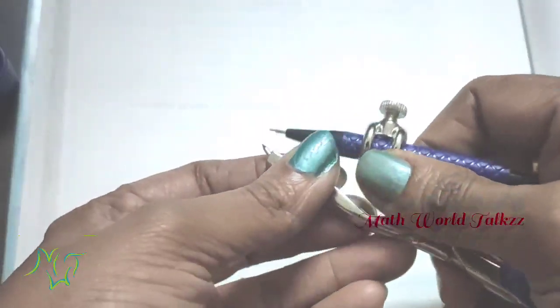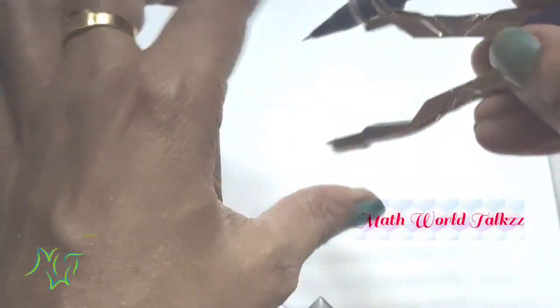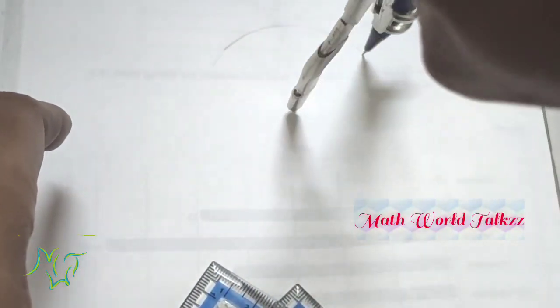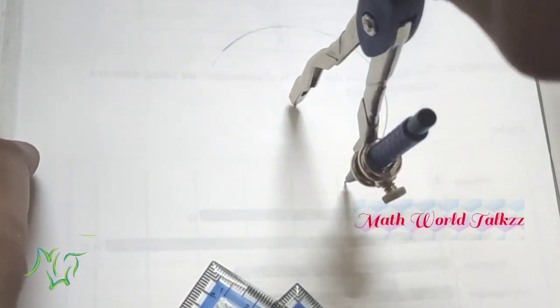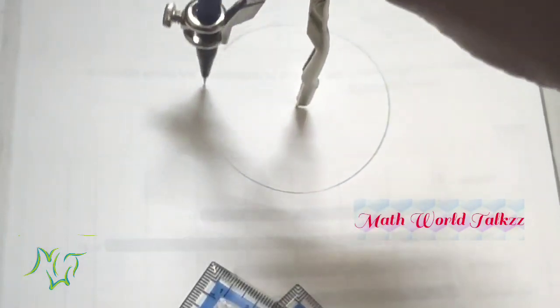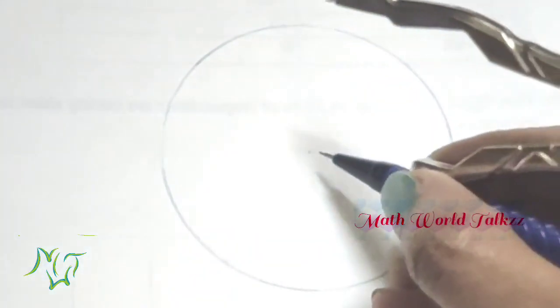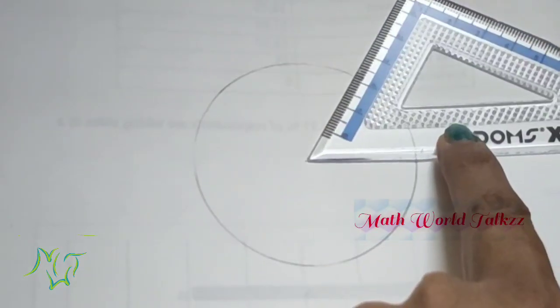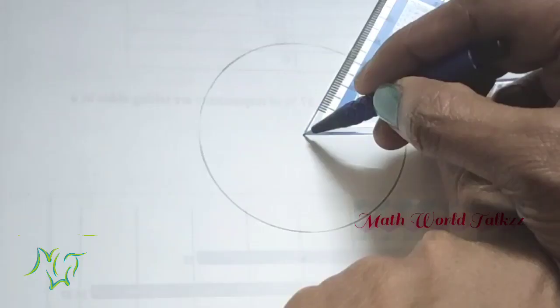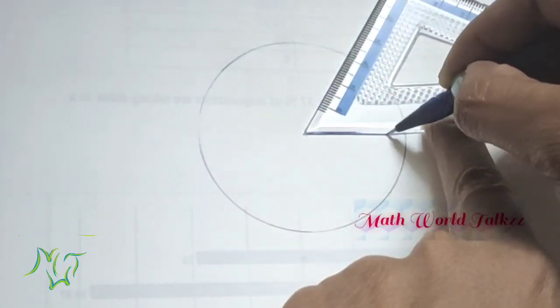Take a compass and draw a circle. So this is a circle and you have the center here. Then keep the set square here and draw a line.